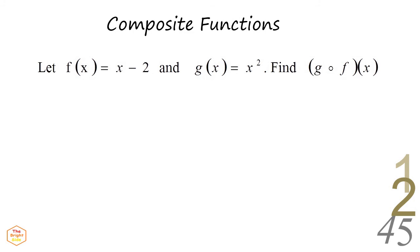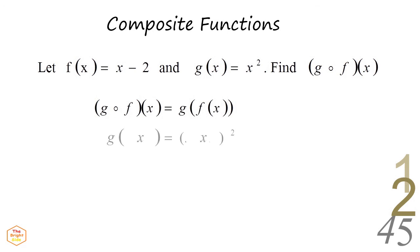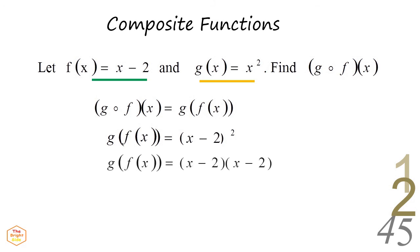For function f of x equals x minus 2, and g of x equals x squared, find g of f of x. When solving composite functions, first we write the first function. Then we replace all the x with the second function. Then just simplify the terms to get the function.